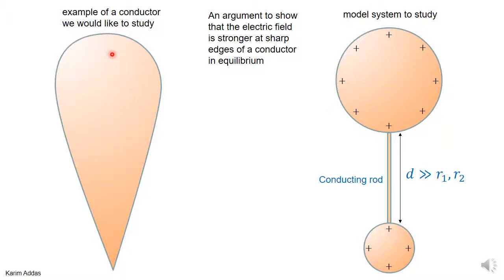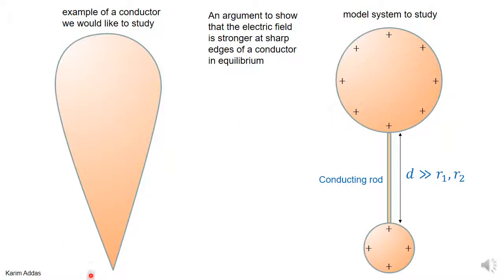If we can prove that the electric field in the region around the small conductor is larger than the electric field around the larger conductor, then we would have made a nice model that proves the idea that the electric field is stronger at sharp edges.